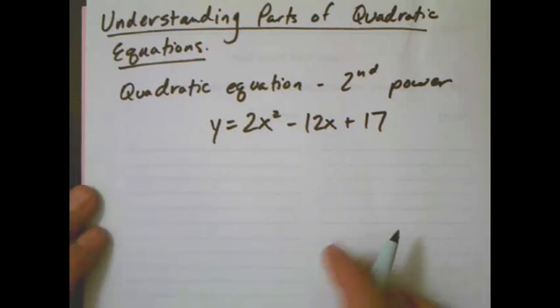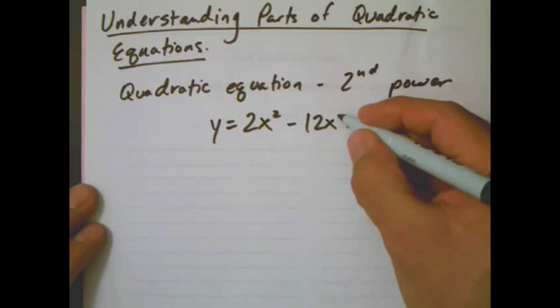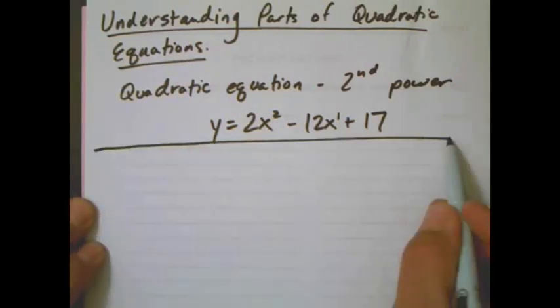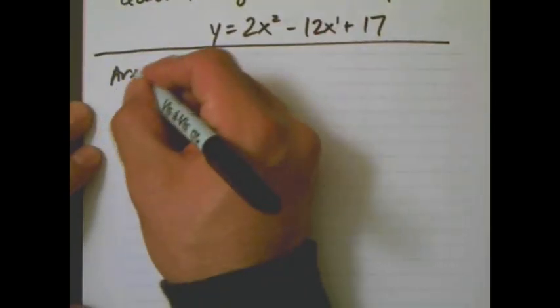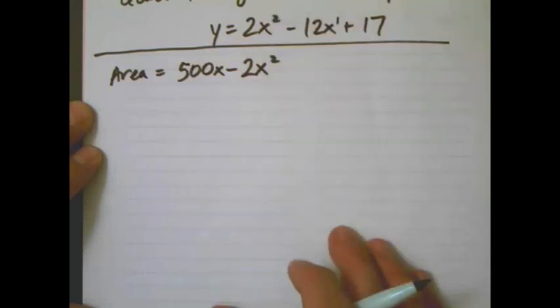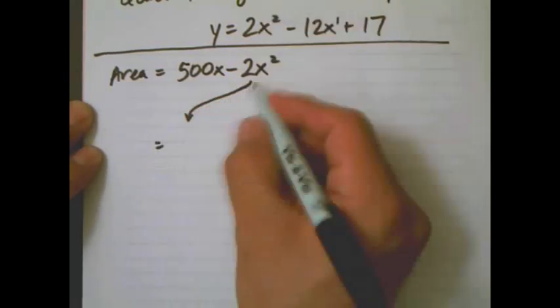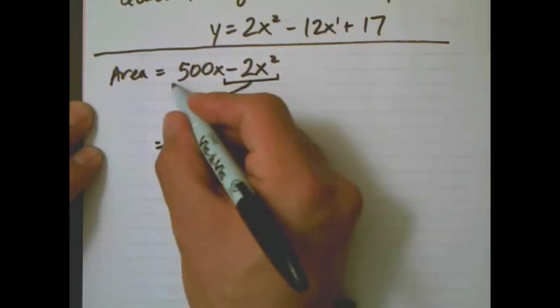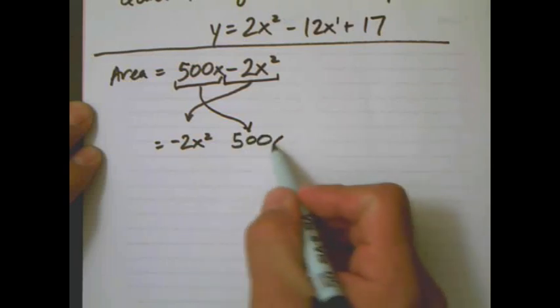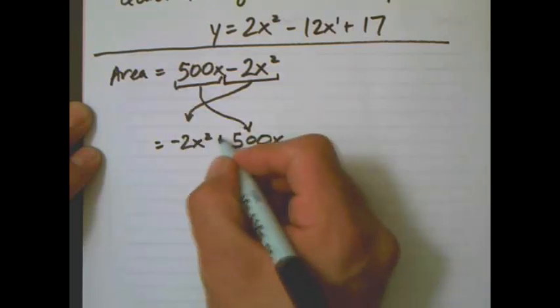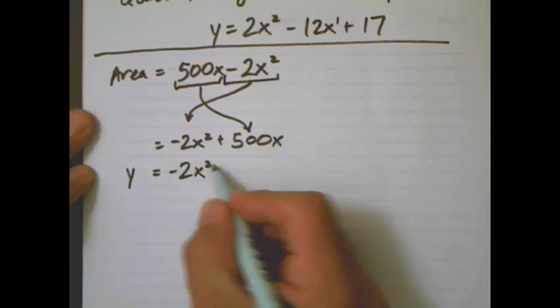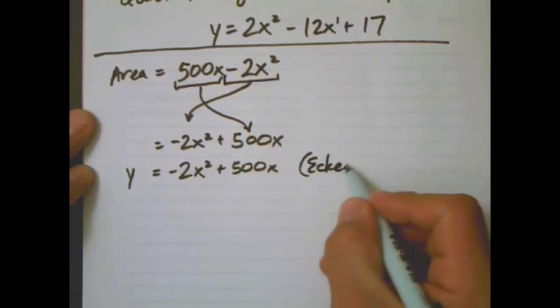So the highest power, even though this one actually technically has a power of 1, the highest power is there, power of 2. So if you can remember back to my backyard, we can move those around, so that this comes first, that's just there, and then this comes second. And since it's positive here, it's going to be positive here. And we can just write that as y equals negative 2x squared plus 500x. And that was Eckert's backyard.